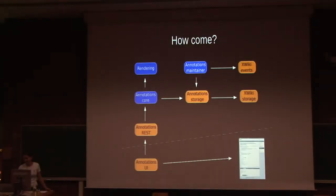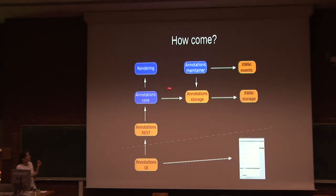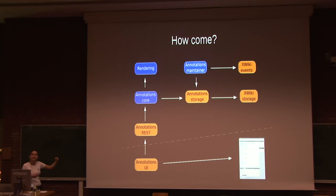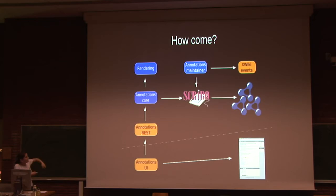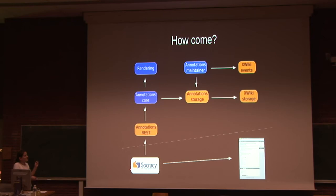How is all this possible? It's possible because of the modular structure of XWiki. There's the annotation core that uses the rendering module to do the rendering of annotations; the maintainer, which identifies the moment when a document updates and automatically readjusts the annotation to still make sense; and the annotation storage, which by default is implemented using XWiki objects. But for Scribo, we could very easily just change this module to make it fetch data from an RDF store — everything else remained unchanged and it still works on top of XWiki. There's also a REST interface that provides data to the annotations UI, which is very flexible due to the JSX extensions. For Socracy, we just adjusted that part slightly, and everything still works properly.